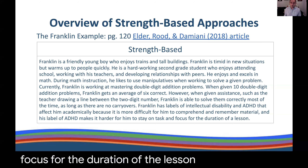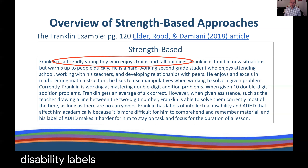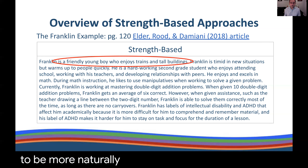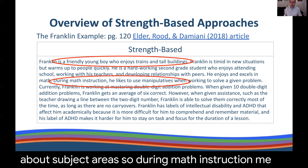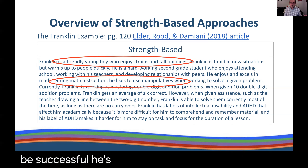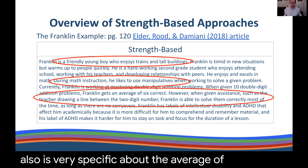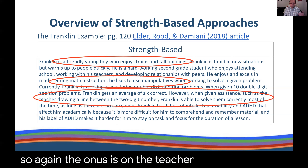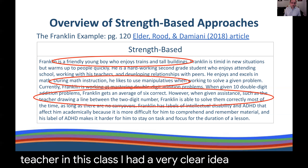Clearly there are differences in how this is written. First, we're starting with strengths and what he's into — he's more than just a sum of his disability labels. If we know what Franklin is into, we know how to motivate him and infuse trains and tall buildings into content so he'll be more naturally interested. During math instruction, we have an idea of what to give him to be successful — he's successful with manipulatives. It's also very specific about the average number of problems he gets correct when given assistance, such as a teacher drawing a line between the two-digit number. The onus is on the teacher to support Franklin, and it's very clear — if I were a substitute teacher, I'd have a clear idea of what Franklin needs to be successful.